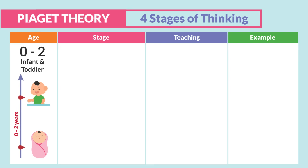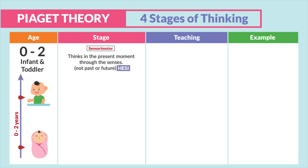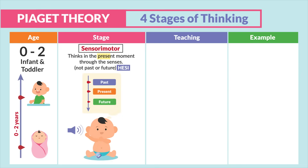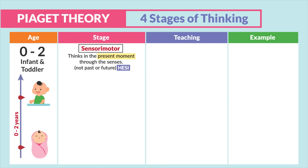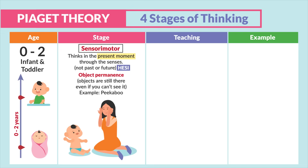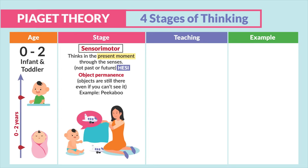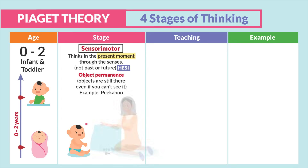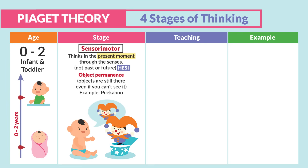The first stage is zero to two years old — the infant and toddler stage. This stage is called sensorimotor. The child thinks in the present moment through senses, not past or future. Another main characteristic is object permanence, where objects still exist even if you can't see them, like playing peek-a-boo — covering a toy with a blanket and uncovering it, or a jack-in-the-box toy. That's why this type of toy is best for this age group.